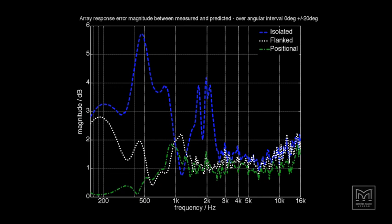The minimum requirement for altering EQ is flanked data. Full positional data is best, and for that, you need BEM.